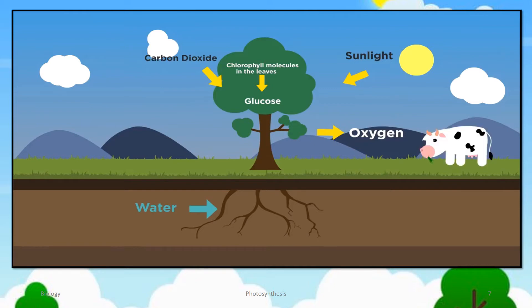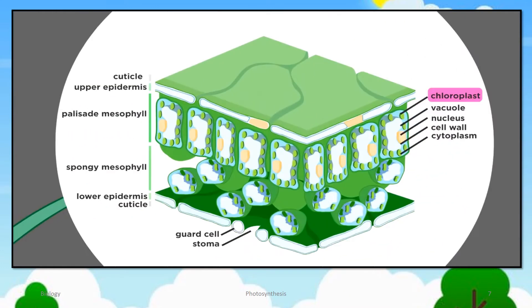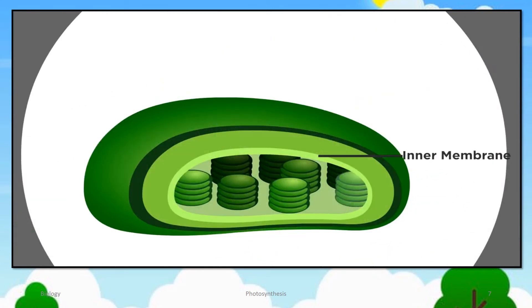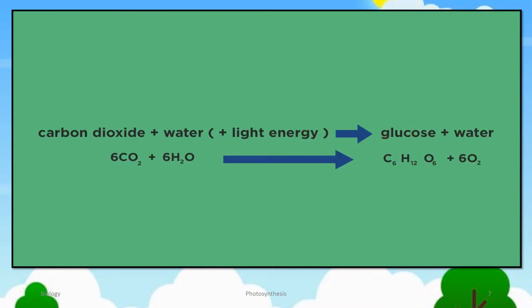So now that we know how important it is and how it starts off all of our food production, you can see why we need to learn more about it in detail. Photosynthesis happens in leaf cells. They contain tiny organelles called chloroplasts, which contain a green substance called chlorophyll. Chlorophyll molecules sit on the surface of the chloroplasts and capture light energy from the sun, which is fundamental for photosynthesis.